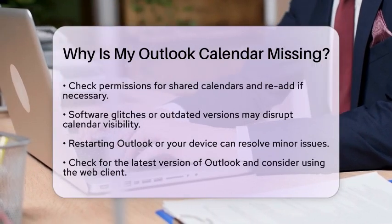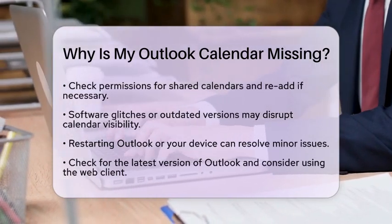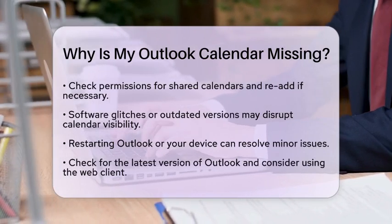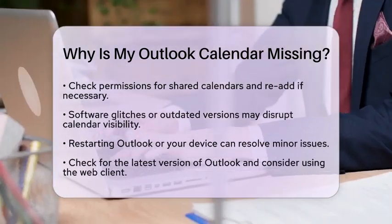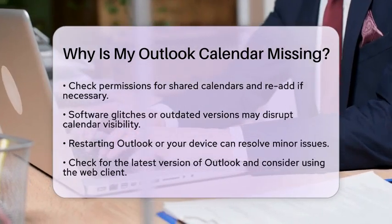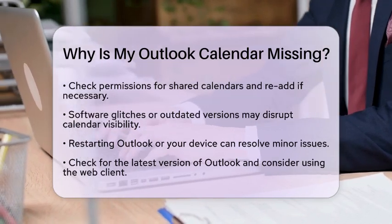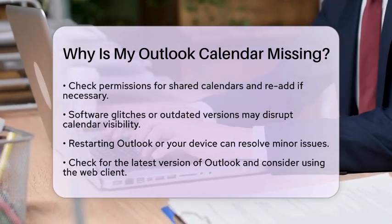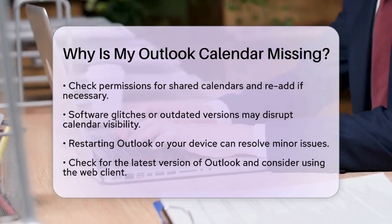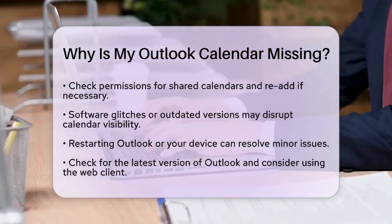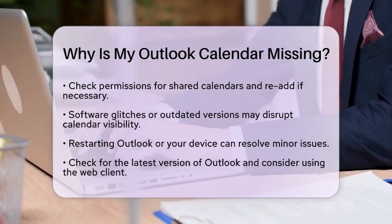Software glitches or outdated software versions can also disrupt calendar visibility. If you encounter this, try closing and reopening Outlook or restarting your device. If the problem persists, ensure that you have the latest version of Outlook installed. You can also try using the web client at Outlook.com to see if your calendar appears there.